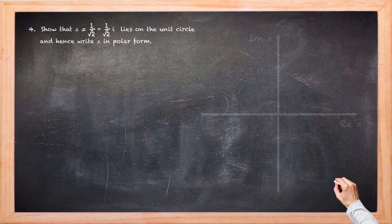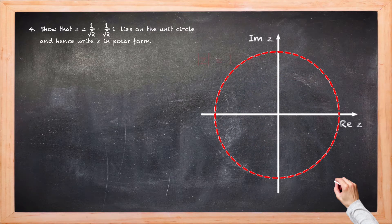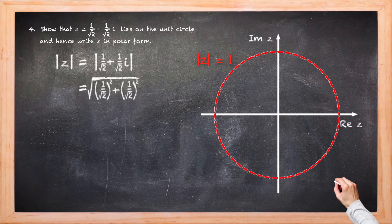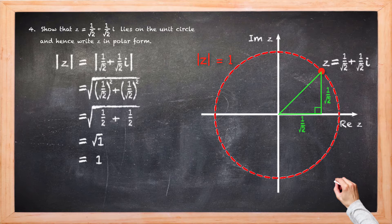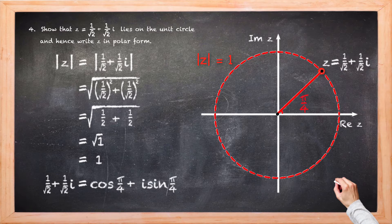Last question: show that the complex number lies on the unit circle. Does it have a modulus of 1? The modulus is found with the square root of the sum of the squares of the real and imaginary parts. We square 1/√2 to give a half; half plus half is 1; the square root of 1 is 1. So that complex number does lie on the unit circle. Since the real part and imaginary part are equal and both positive, it's in the first quadrant. Looking at the isosceles triangle formed, the argument is π/4, giving polar form cos(π/4) plus i sin(π/4).